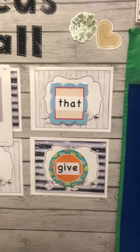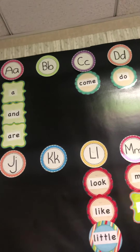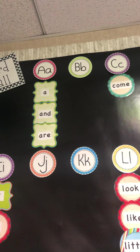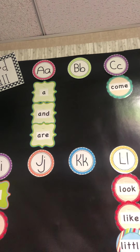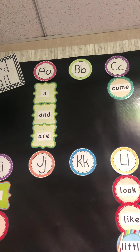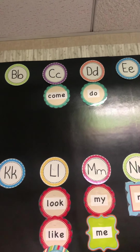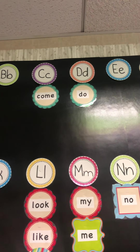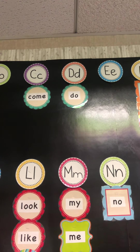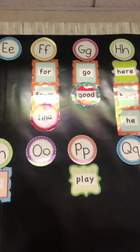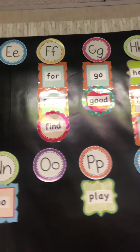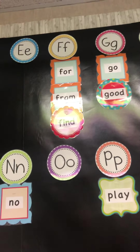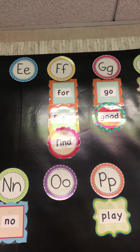Now I'd like to take you over to the word wall and go over all of the words we have learned. Under A, we've learned 'a' and 'are.' Read these with me. Under C is 'come.' Under D is 'do.' Under F is 'for,' 'from,' and 'find' — that one we learned last week.